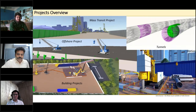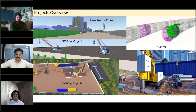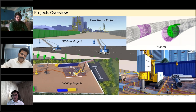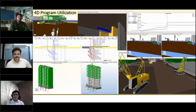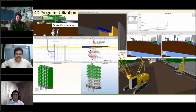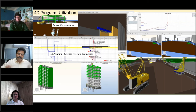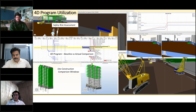4D can be used for multiple types of projects, such as mass transit projects, offshore projects, building projects, tunnels, and stations. You can use a 4D program for any of those kinds of projects. Beyond good visuals, there is much more we can do, like earned value analysis and monitoring delays using a 4D program. We can identify safety risks — whether the working environment is safe to deploy machineries — and do safety risk assessments. We can also do baseline vs. actual comparison of 3D models in line with the 4D program.